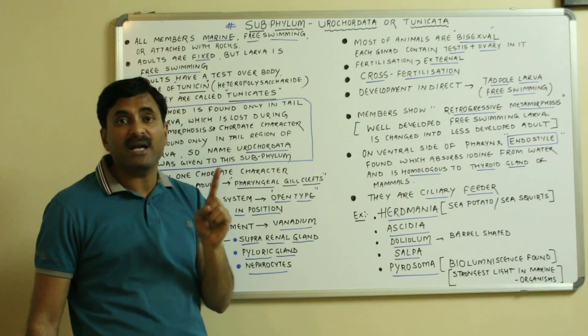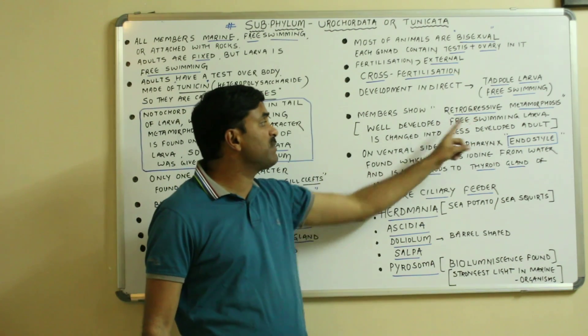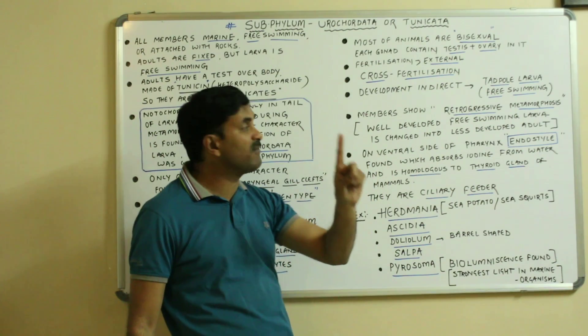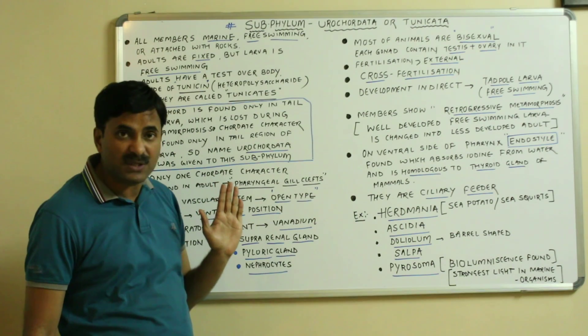So very developed free swimming larva is changed into a less developed adult. Such type of metamorphosis is called retrogressive metamorphosis.